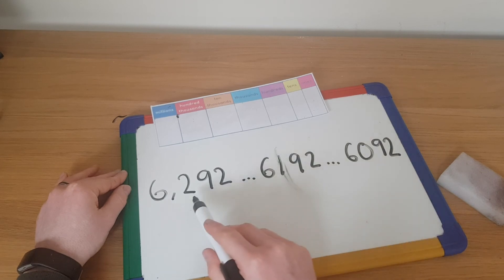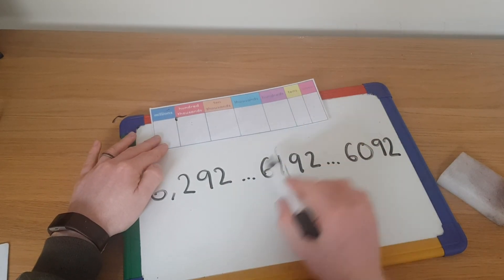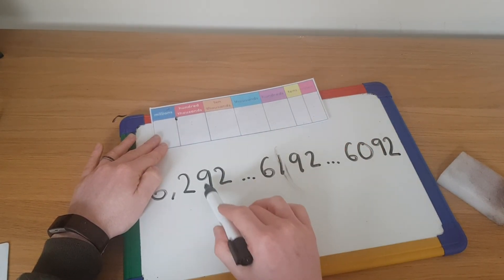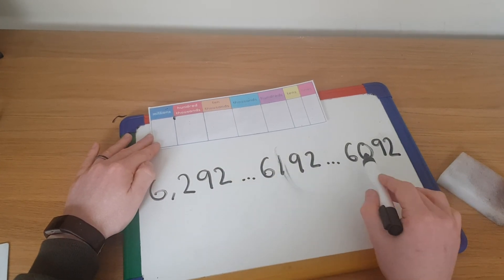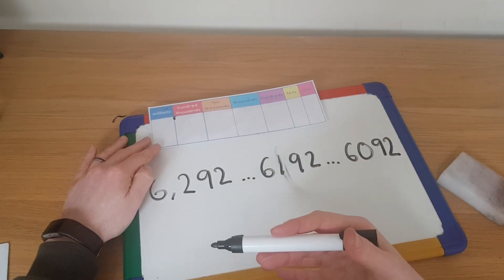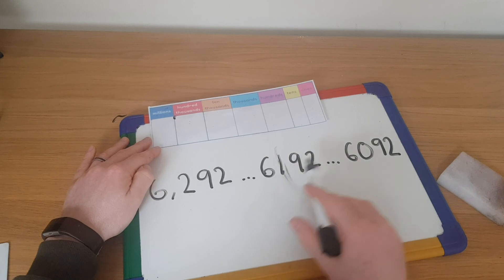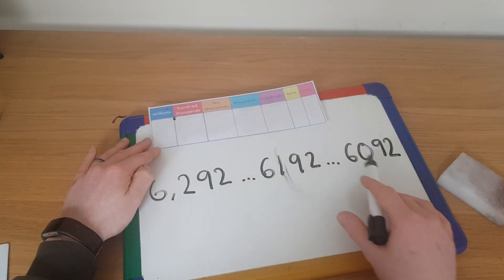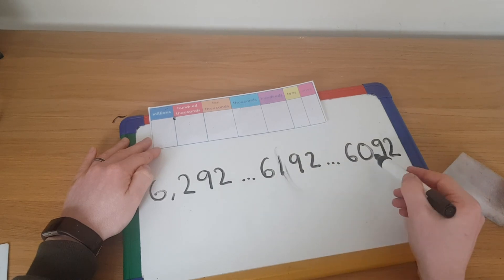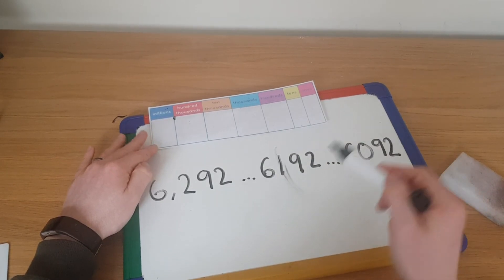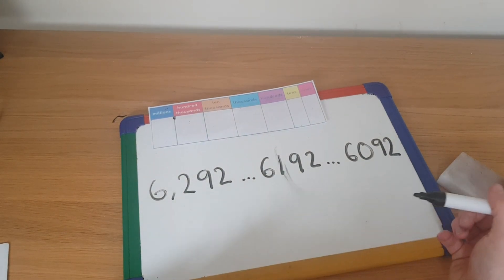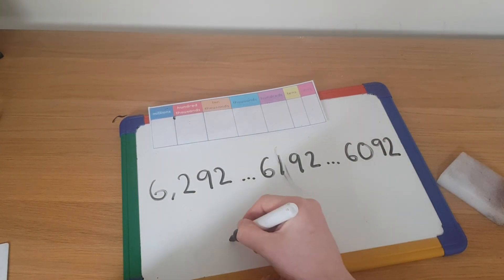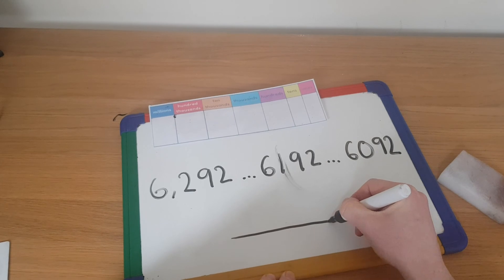Oh, it's decreasing. I'm taking something away. I'm taking away one lot of a hundred every time. So I'm going down by one hundred every time. But what happens then if I can't take away any more hundreds? What must I then do? Hopefully, you will then be able to tell me what the next number is.